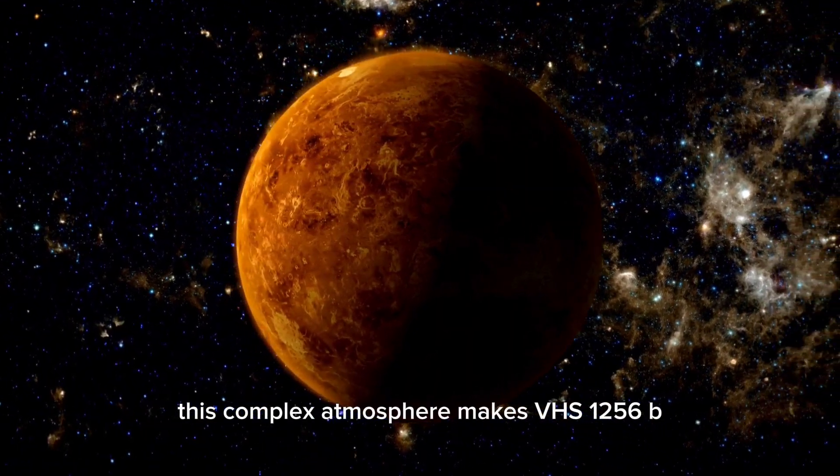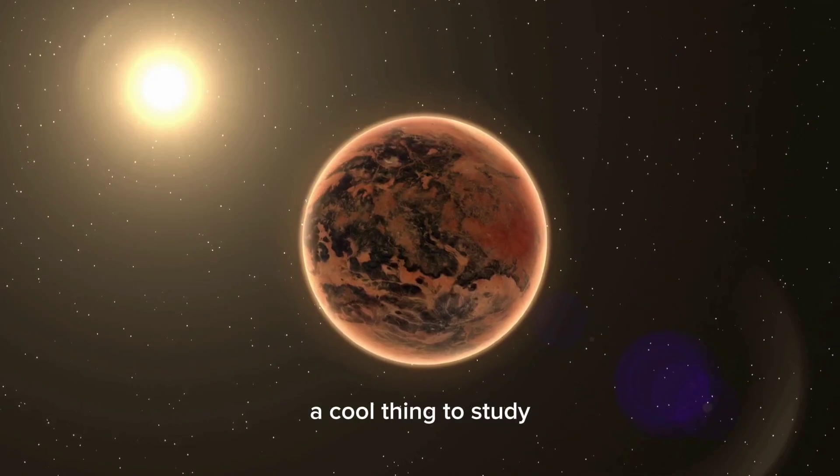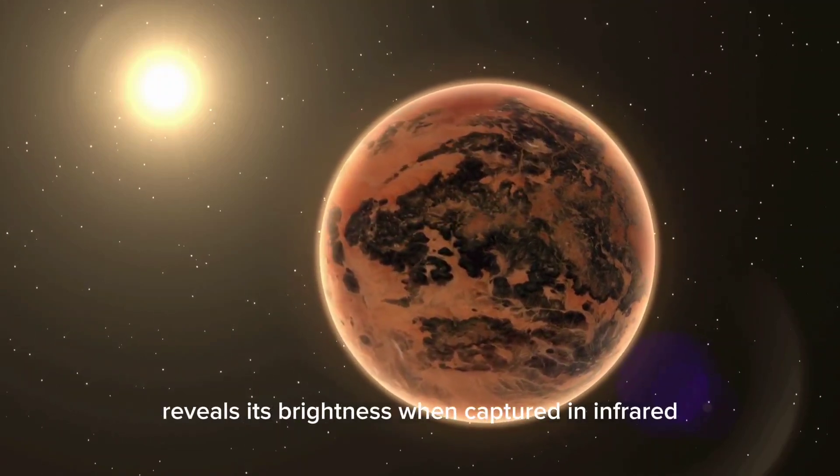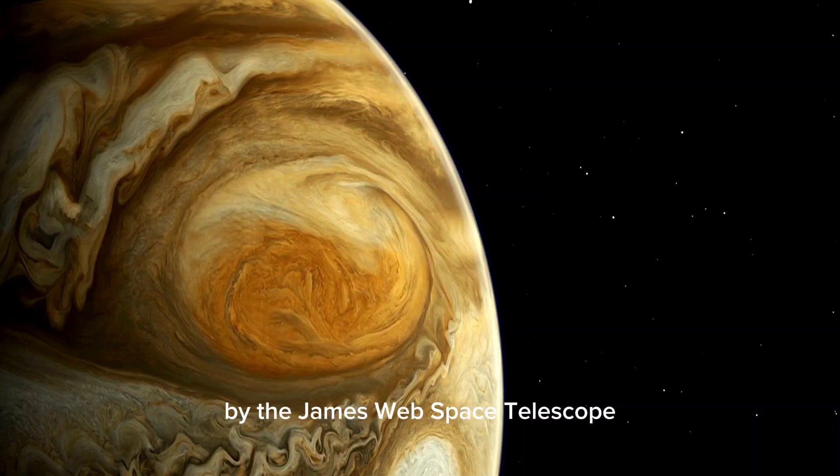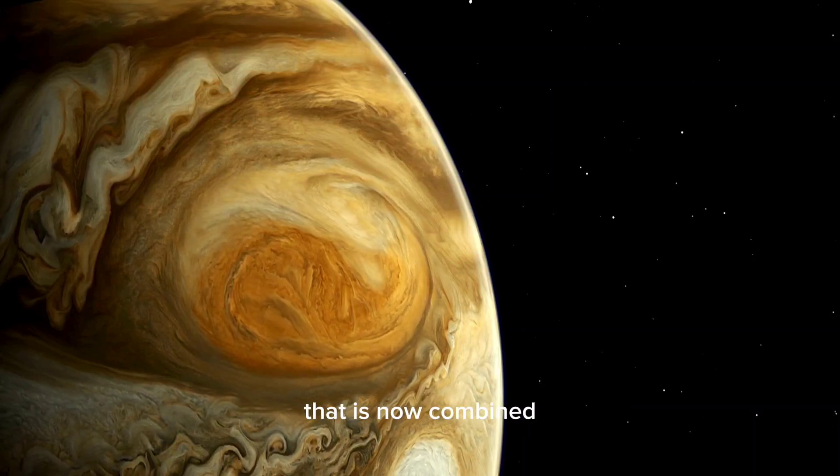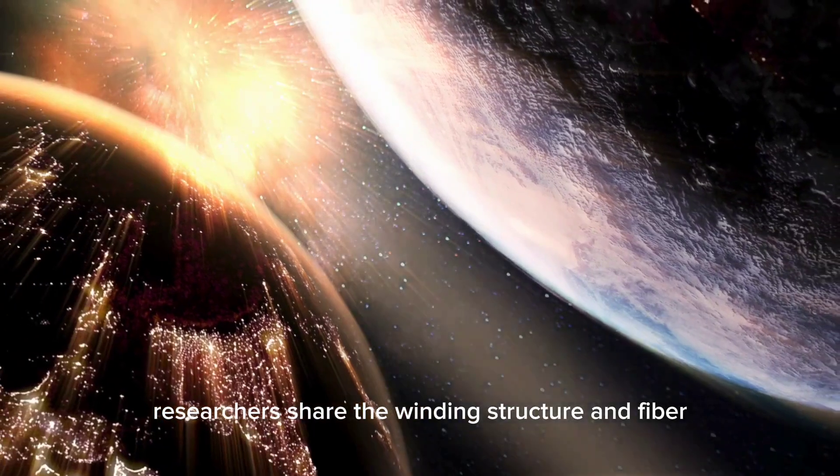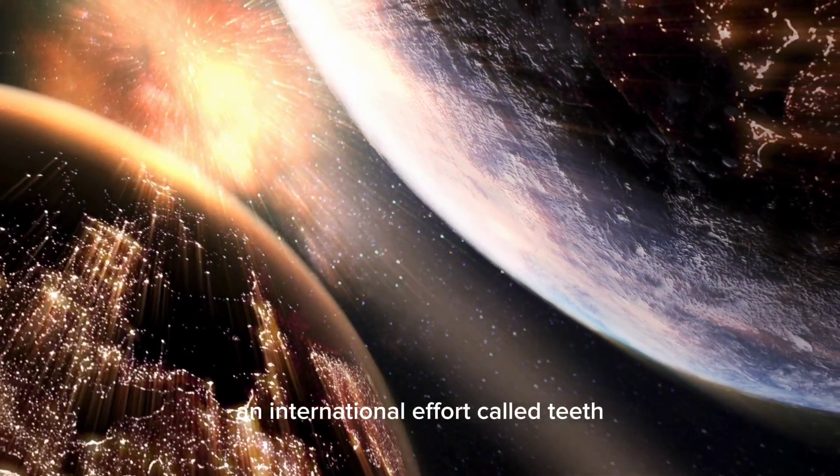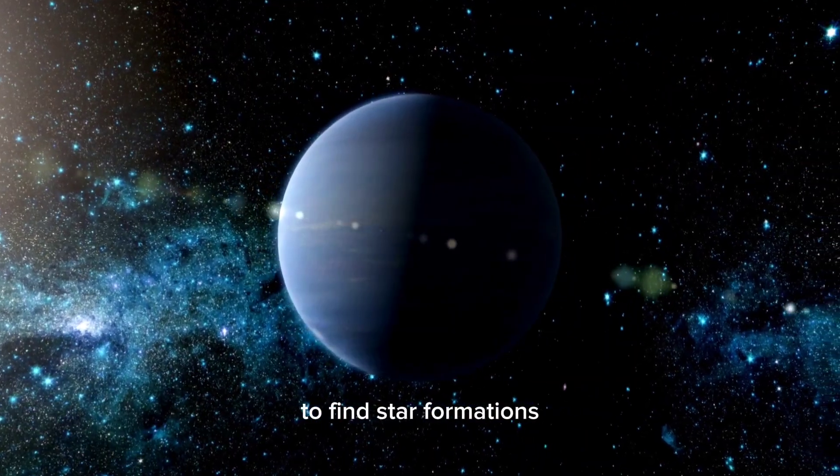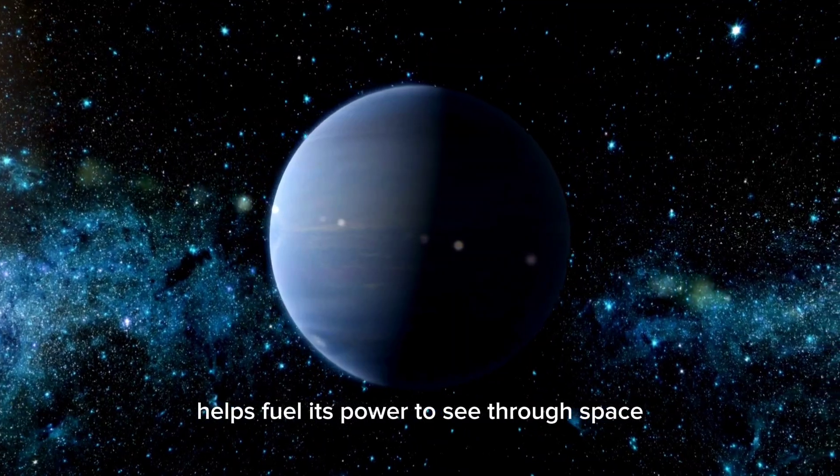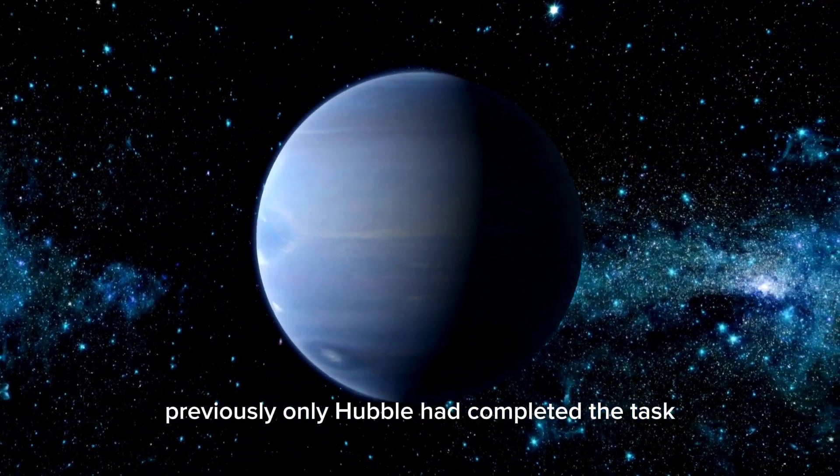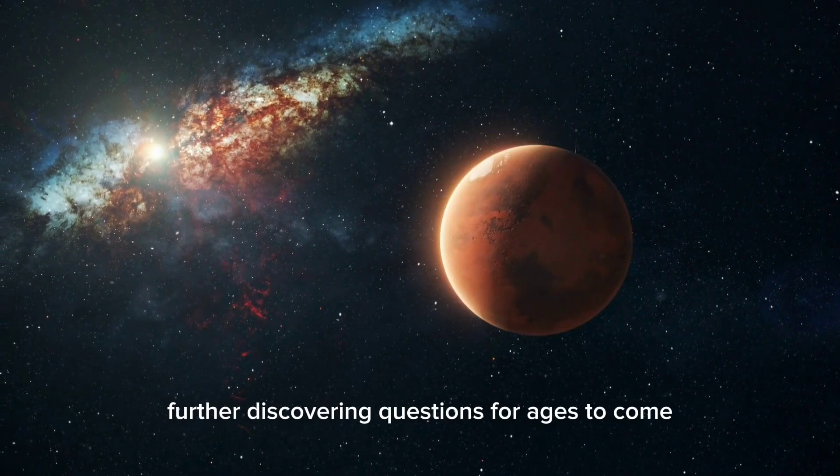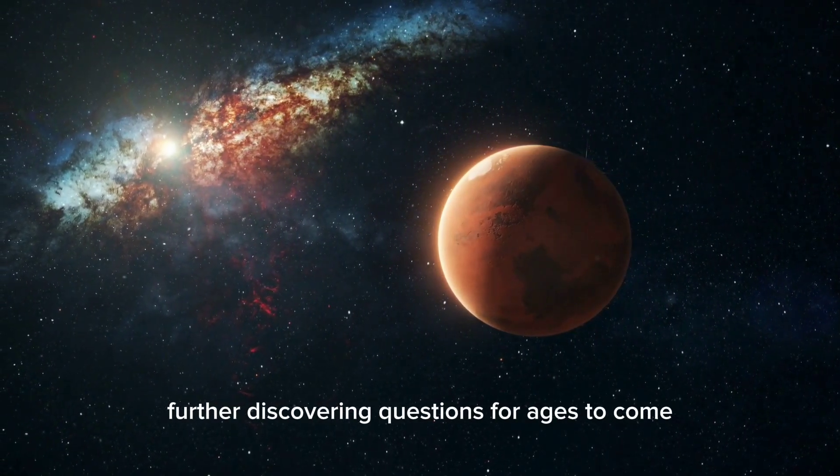This complex atmosphere makes VHS-1256b a cool thing to study. The ghost, dark and elusive in the dark, reveals its brightness when captured in infrared by the James Webb Space Telescope with a composition Hubble captured that is now combined. Researchers share the winding structure and fiber dust clouds creating beauty. An international effort called TEETH, using Webb's power to see through dust to find star formations helps fuel its power to see through space. Previously, only Hubble had completed the task. In February of this year, the James Webb Space Telescope aided further, discovering questions for ages to come.